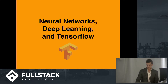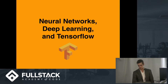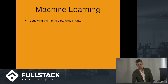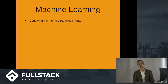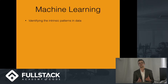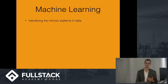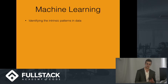Machine learning and big data is very much the same thing. That's all machine learning is — giving a computer a bunch of data, telling the computer to identify the pattern, find the pattern, and then extrapolate that pattern into an output.